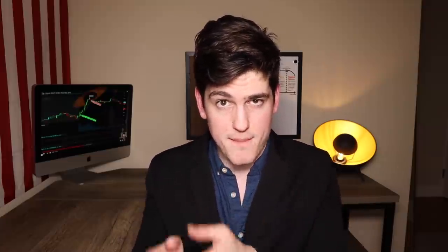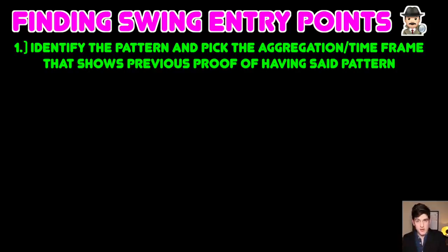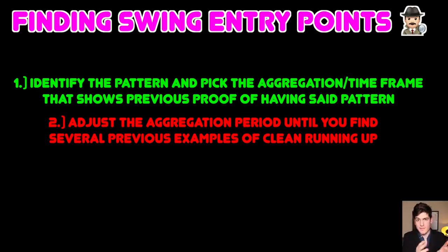Let's break this down step by step. Here is a step-by-step guide on how to analyze and find the correct entry point for your swing trades. Number one: identify the pattern that you're trying to trade off of and pick the time frame that holds several examples of said pattern. If that's the comeback king or comeback queen pattern, you're looking at the RSI — which one has more opportunities for running up after the RSI was oversold and then went to overbought? Or if you're trading off a trend line, which aggregation period displays the pattern you're trying to trade off of?